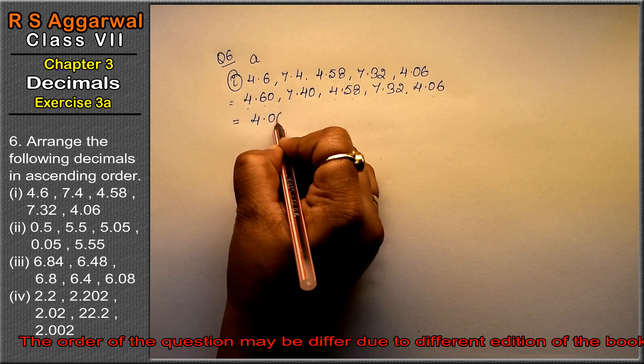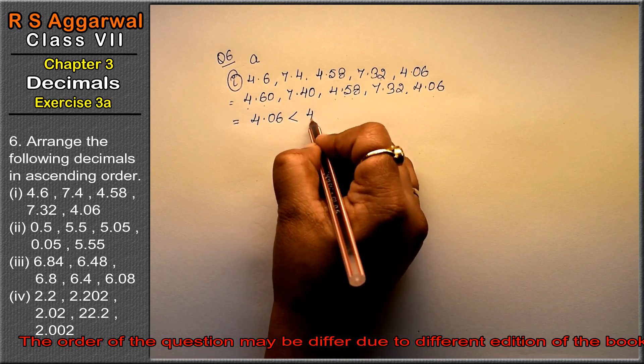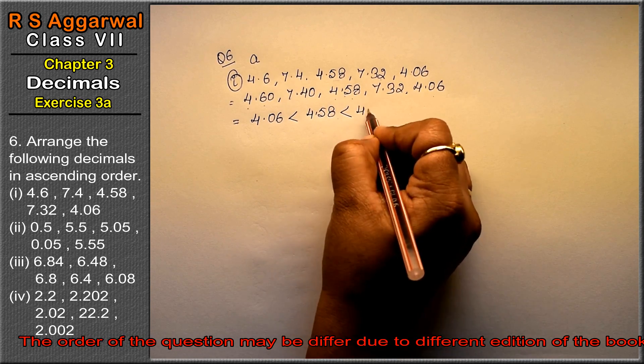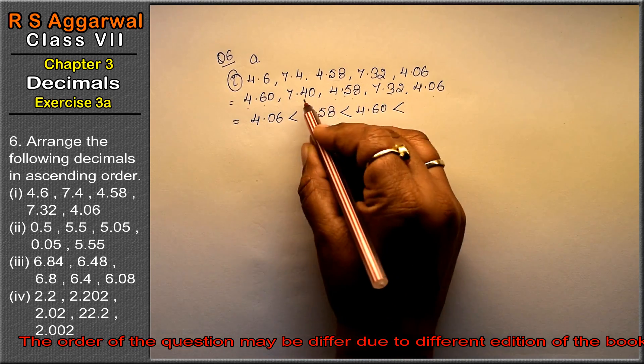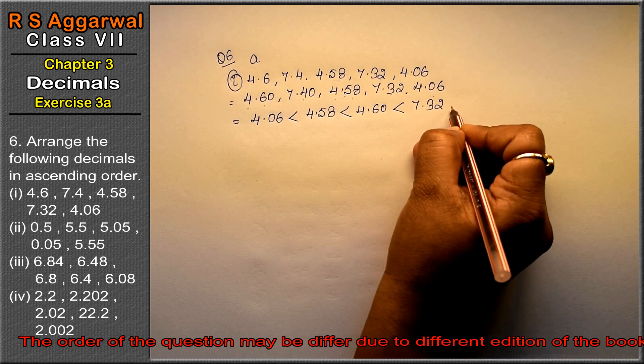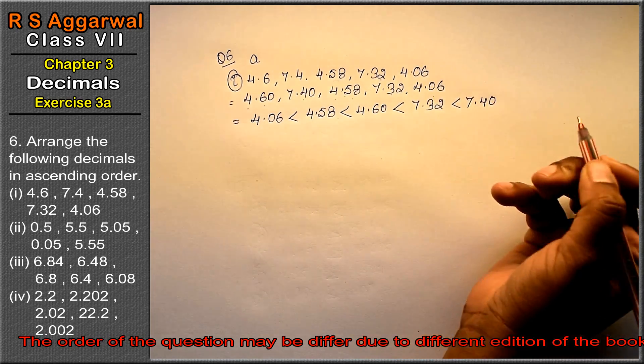What was the next biggest? 4.58. Then 4.60. And what was the biggest one? Between 7.32 and 7.40, since 7 is the same, we compare: 40 is bigger, so 7.40 is the answer.